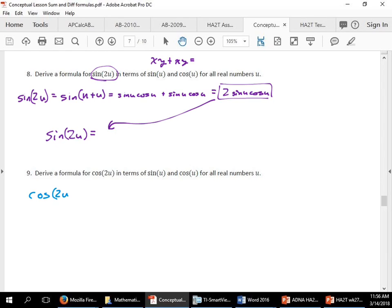Okay, my turn. My turn. Here we go. This is cosine u plus u. This equals cosine u times cosine u, says the sum formula. Minus sine u times sine u.